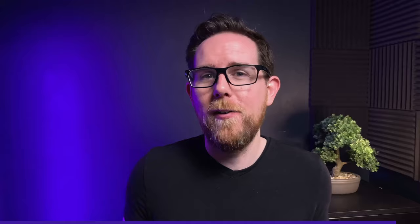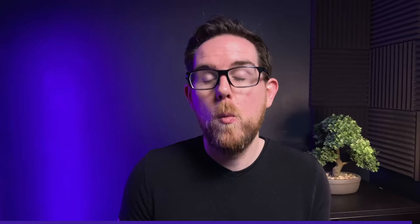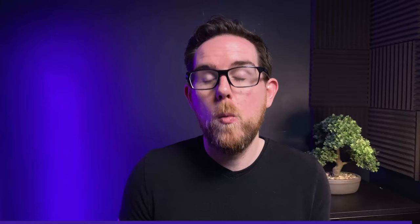The billing domain doesn't care about video quality — it only cares about the subscription plans. So we need to do a mapping between the viewer in the streaming domain and the subscriber in the billing domain. To make sure that we don't pollute either of the domains with information that doesn't need to be there, we create what we call an anti-corruption layer, which does the translation between the domains for us.